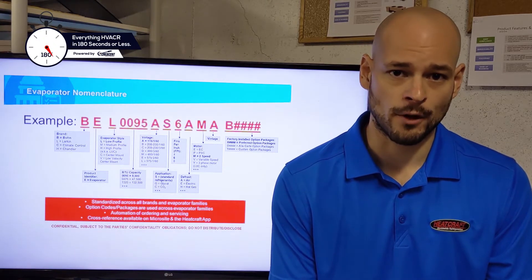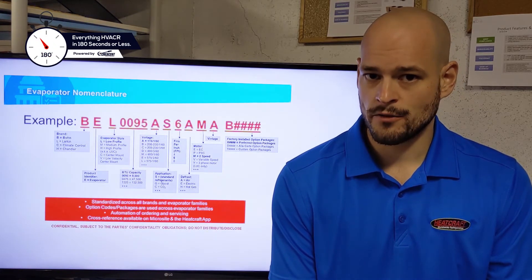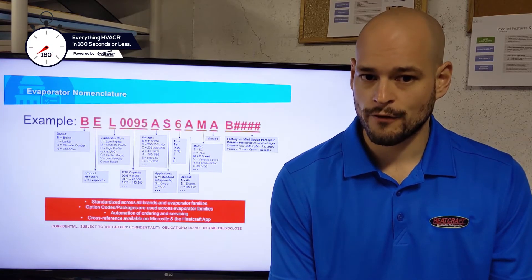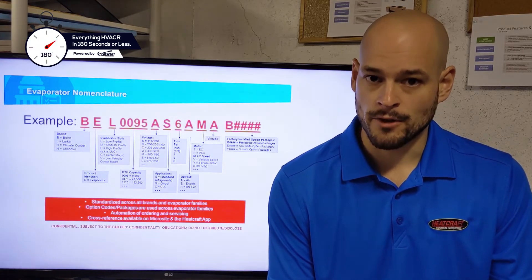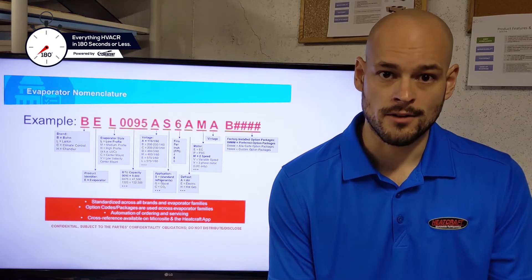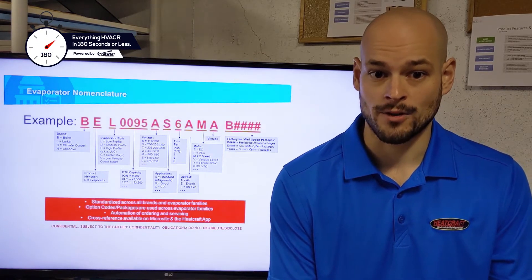Your next digit is going to be your voltage code. This has not changed from our old nomenclature. A is 115 single phase. B is going to be 208-230 single phase. C is going to be 208-230 three phase, and D is going to be 460 three phase.